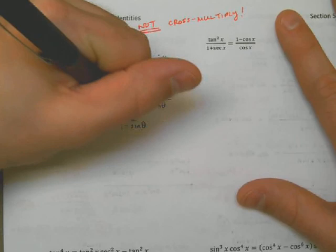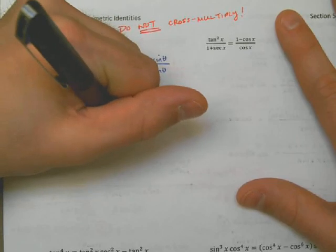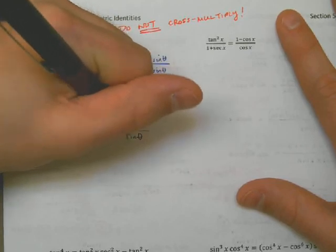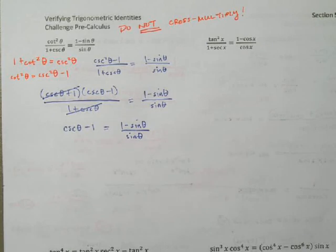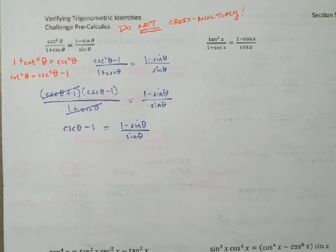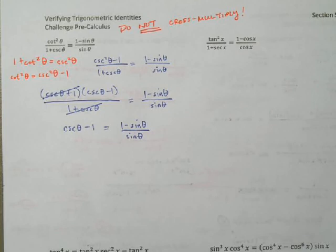There are two examples where we have fractions on both sides. Tricks of the trade: one, do not cross multiply — absolutely against the rules. Start with the more complicated side that has more than one term in the denominator. Anytime you see a square, you can probably guess you'll use a Pythagorean identity to rearrange the numerator, then factor from there.